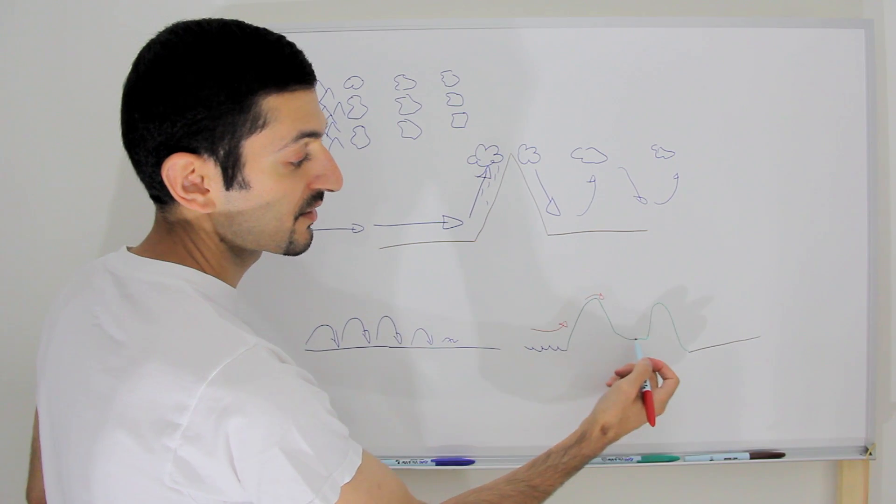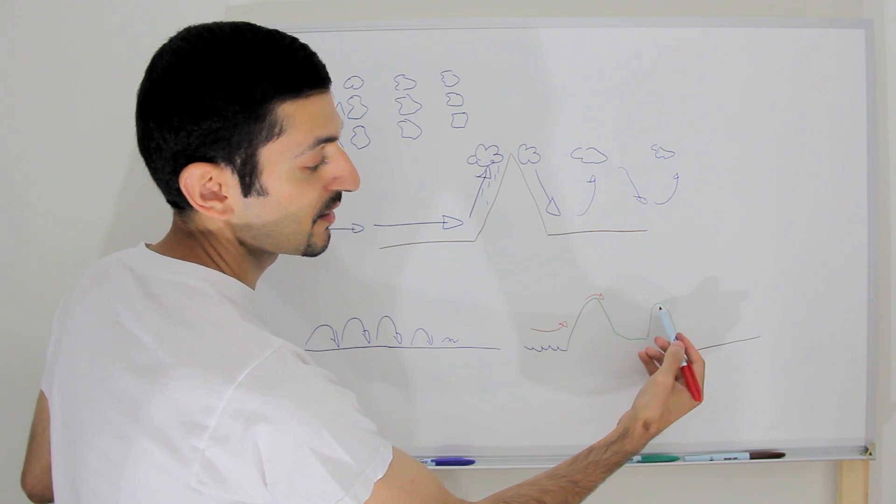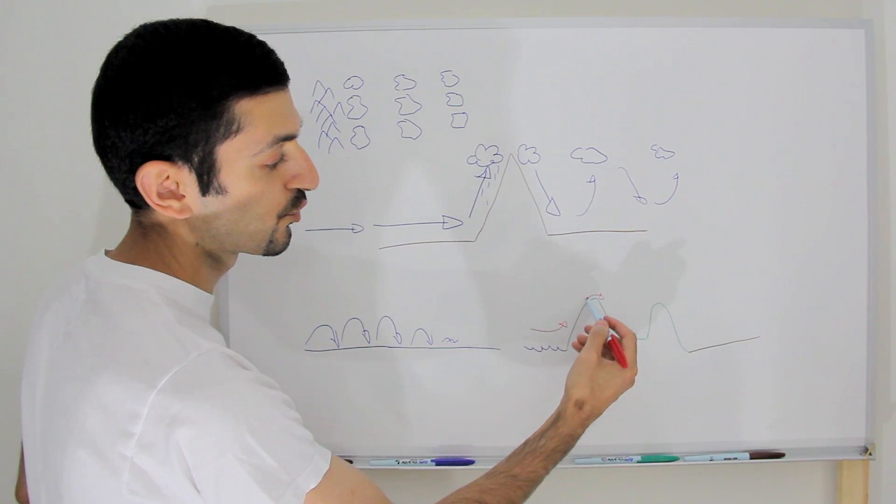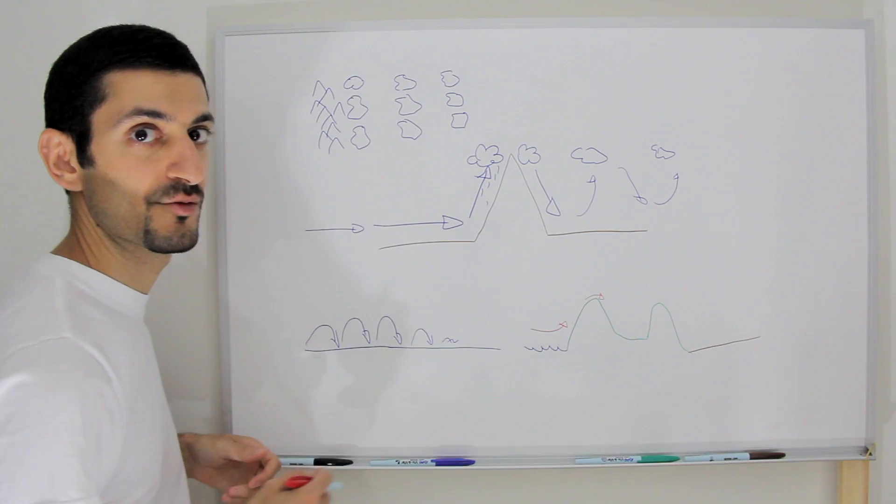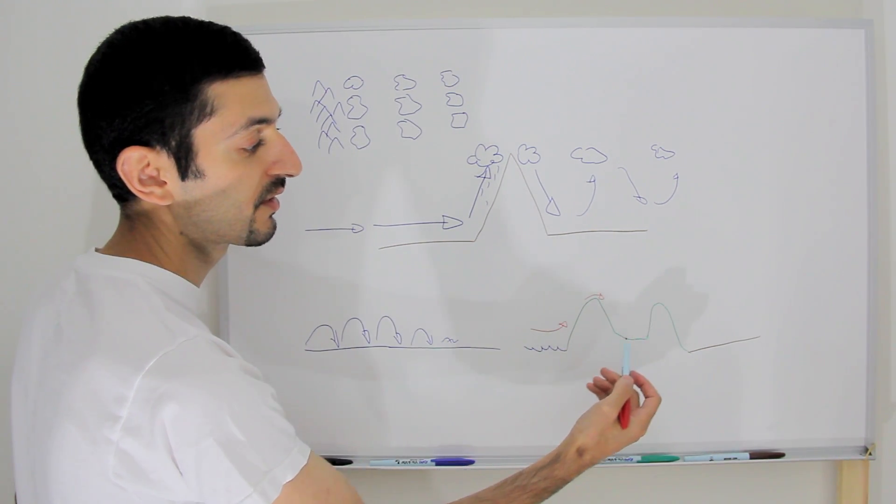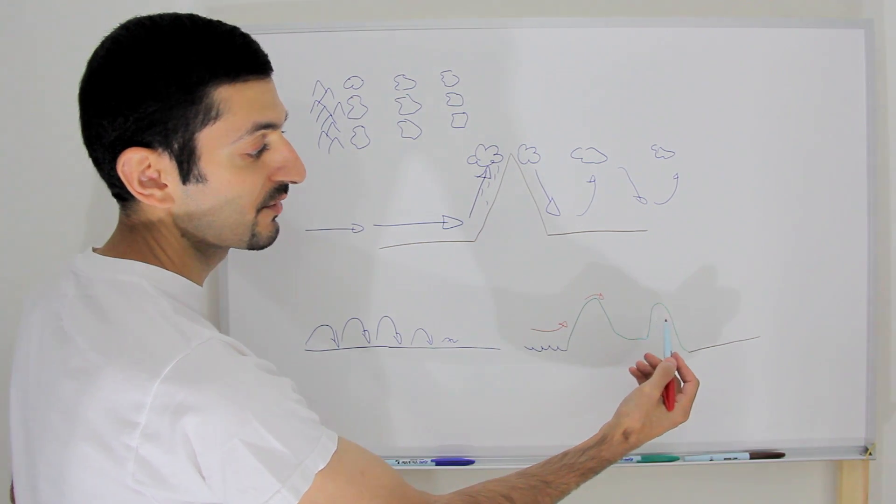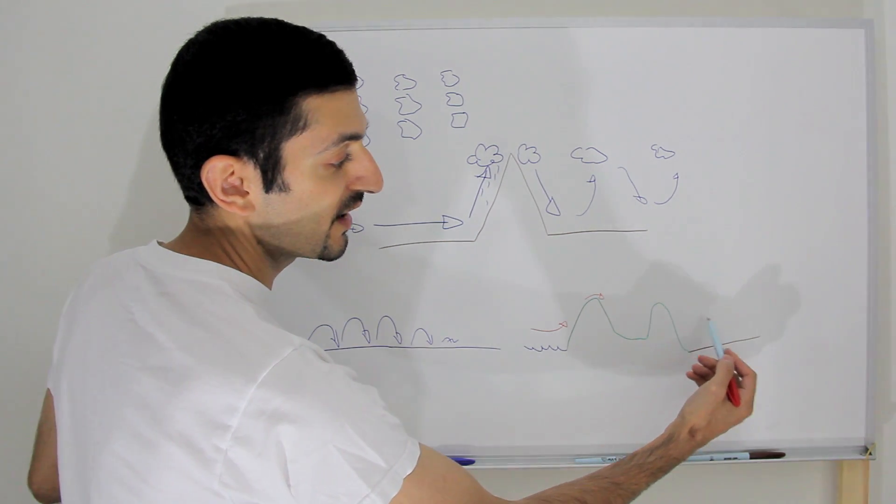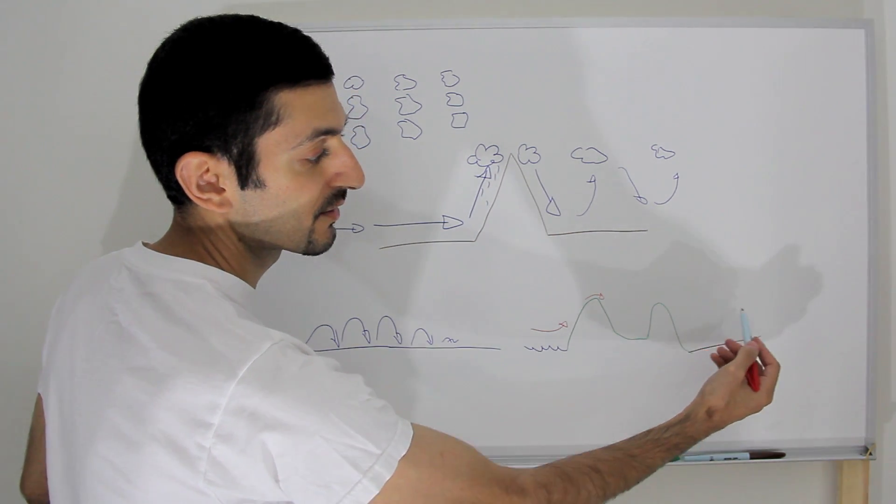And then you have the Bekaa plateau and then the anti-Lebanon mountains. So here you have more moisture, especially in the wintertime it can rain a lot, and then you have a nice fertile plain fed by 13 major rivers, and with a second mountain range it gets really dry over here that very little clouds tend to form and you have a nice desert.